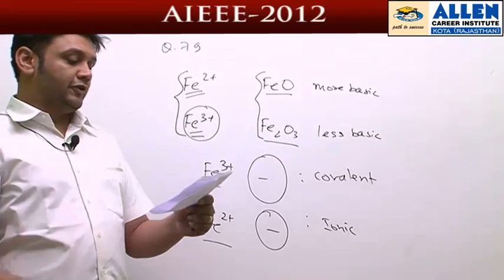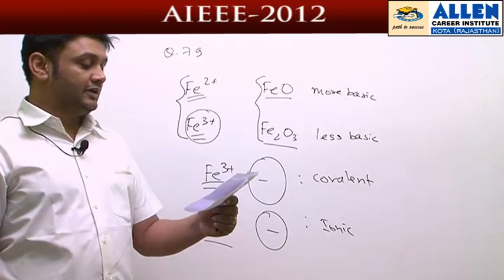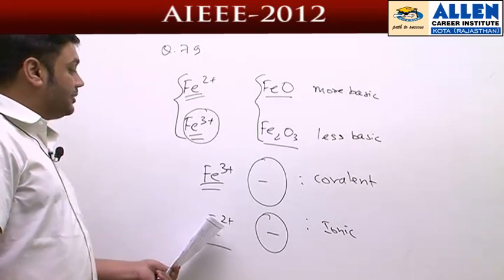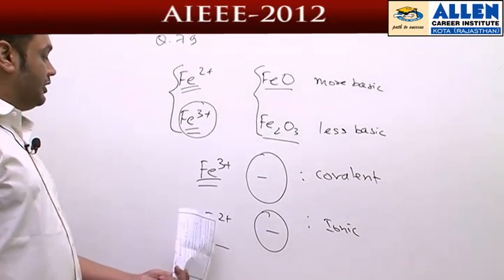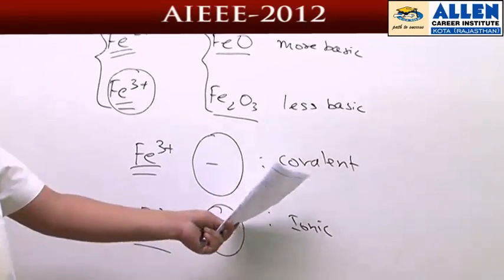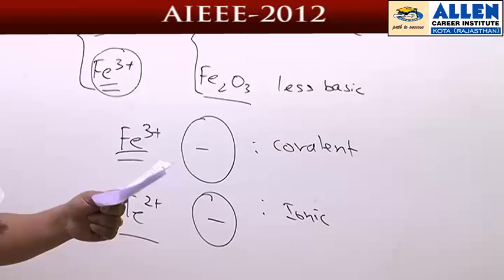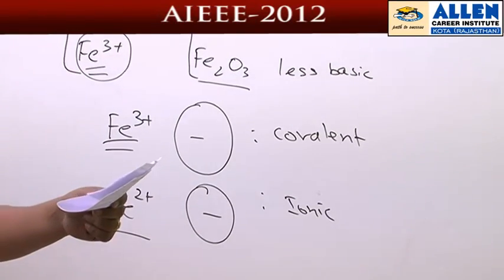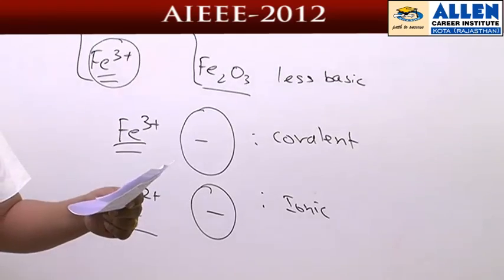The fourth one says ferrous compounds are less volatile than the corresponding ferric compounds. If you talk about ferrous compounds, we discussed earlier that ferrous compounds are more ionic in nature compared to ferric. Being more ionic in nature, they are less volatile because of high melting and boiling point.